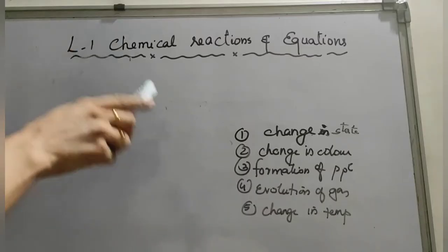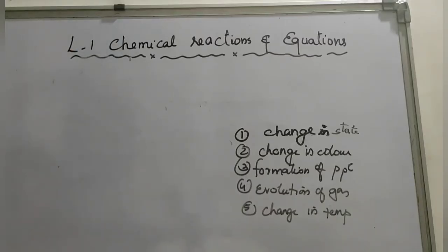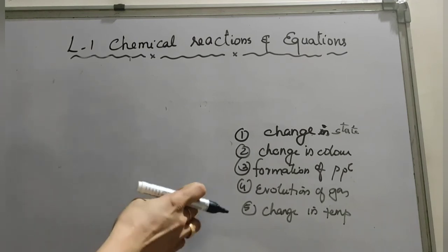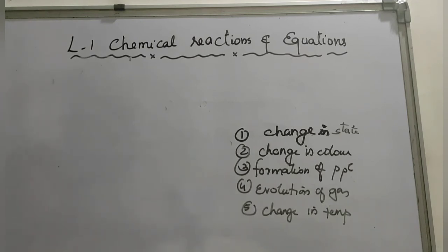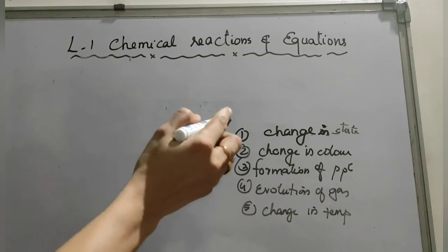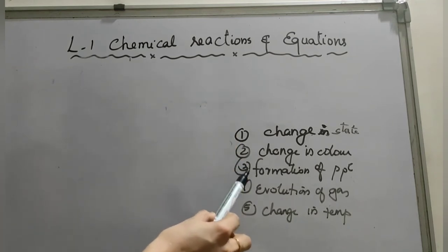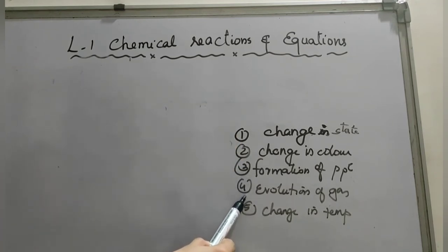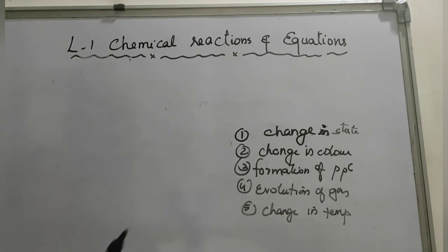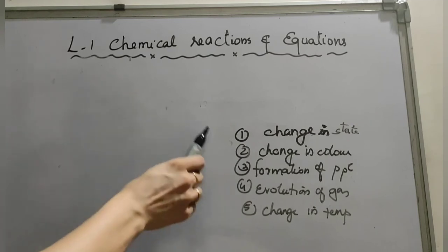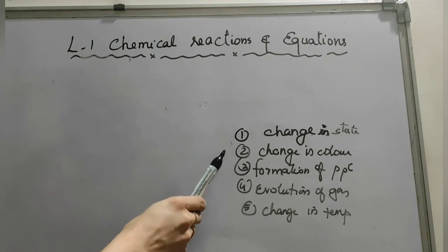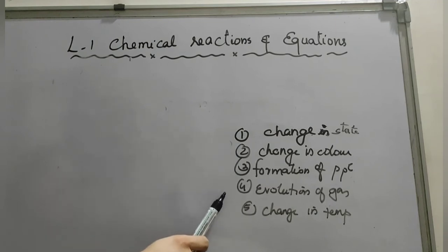From the above three activities, the following observations determine whether a chemical reaction has taken place. The five characteristics of a chemical reaction are: change in state, change in color, formation of precipitate, evolution of gas, and change in temperature.